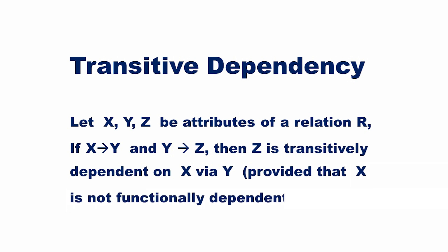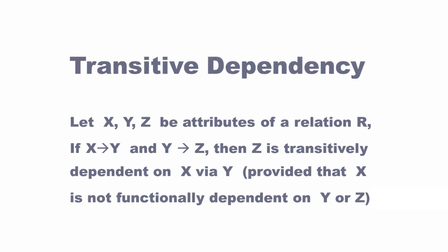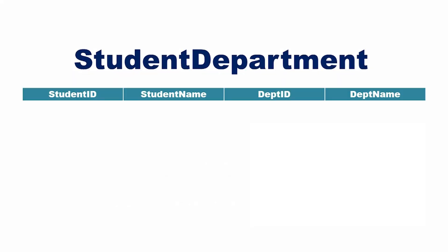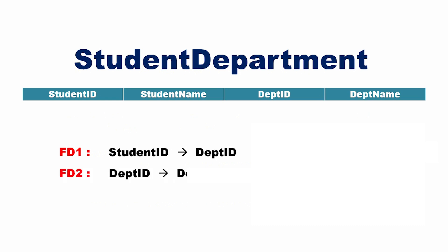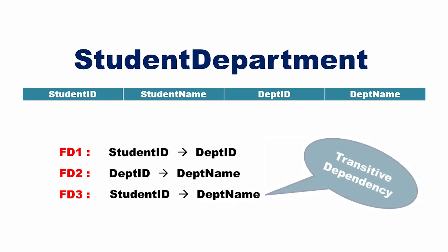Consider the student_department table having attributes student ID, student name, department ID, and department name. Student ID determines department ID — that is a functional dependency on the table. Similarly, department ID determines department name. Therefore, student ID determines department name, which is a transitive dependency on the student_department table.